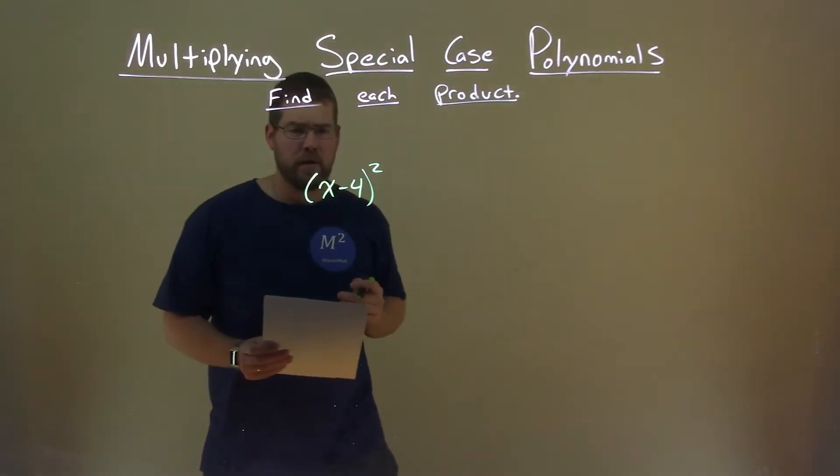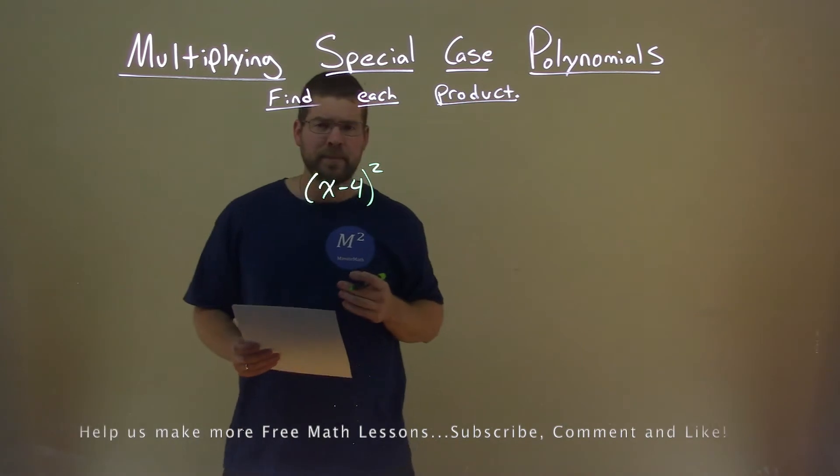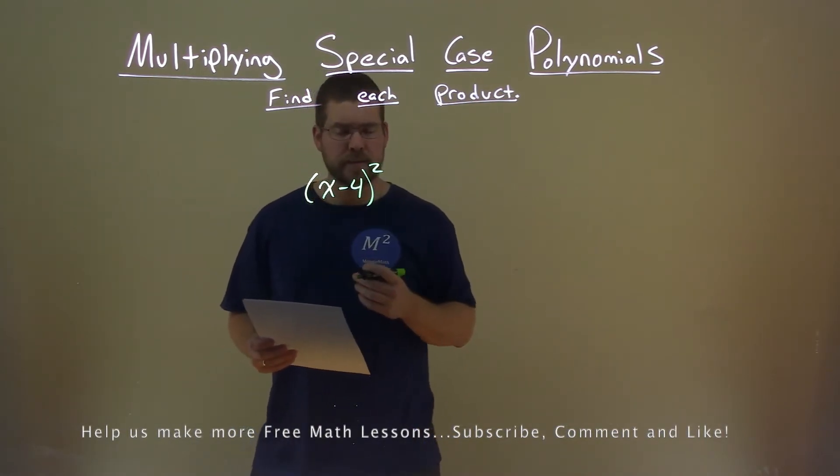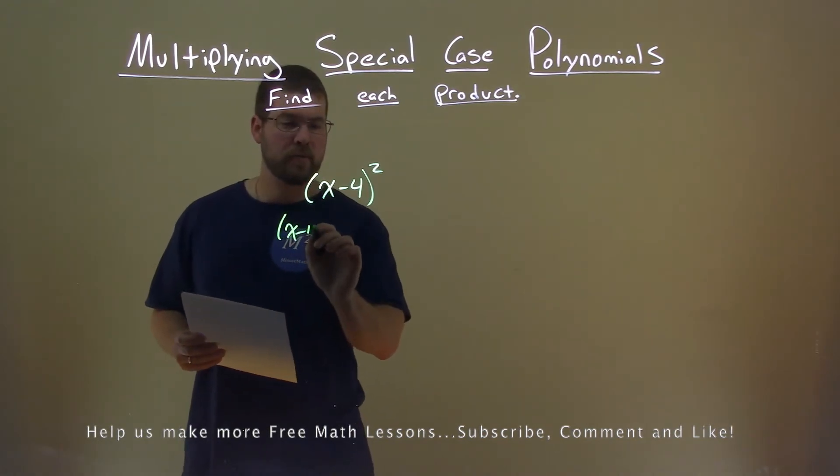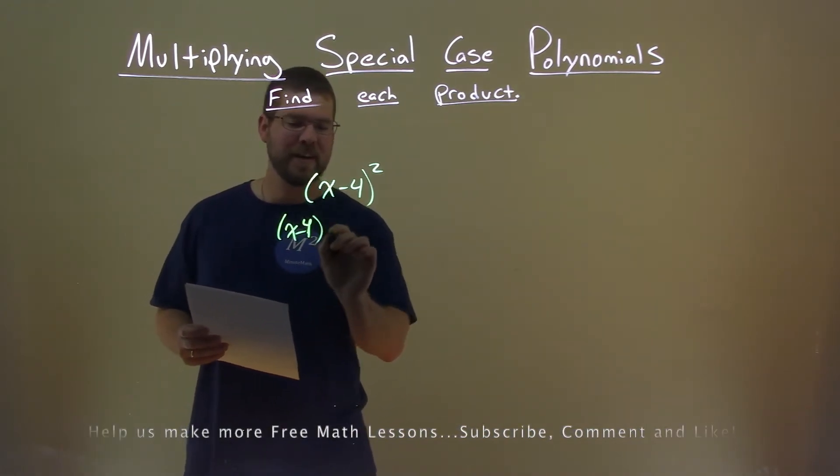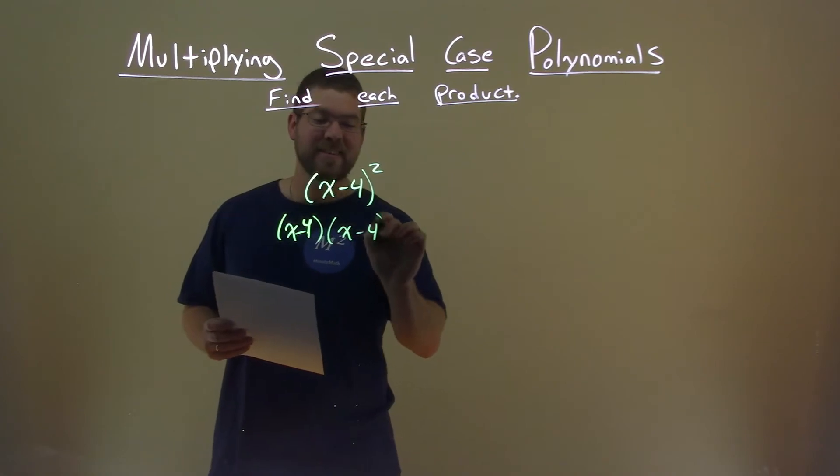We're given this problem here: x minus 4 all squared, and we need to find the product. Well, x minus 4 all squared, we know can be written as x minus 4 times x minus 4.